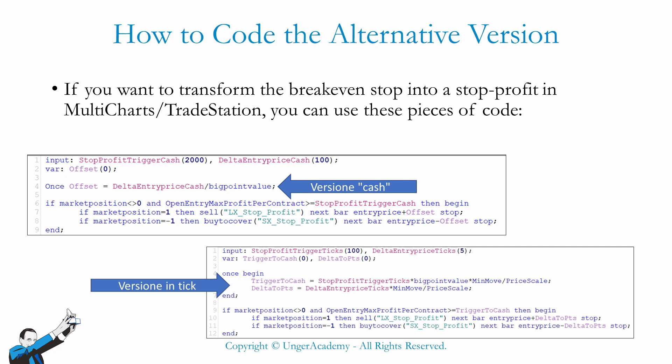The purpose of this kind of stop is to reduce somehow the impact of trading costs, such as commissions, spread, and slippage. Unfortunately, MultiCharts and TradeStation don't provide any position management function for this kind of stop. However, coding the stop is not that complicated. Here you can see how to code two versions of the stop profit: one that works with a monetary amount and one that works with an amount expressed in ticks.